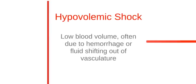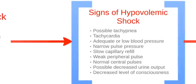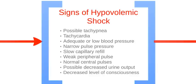First we'll talk about hypovolemic shock. Hypovolemic shock is caused by low blood volume, often due to hemorrhage or fluid shifting out of the vasculature. The signs include possible tachypnea, tachycardia, adequate or low blood pressure, a narrow pulse pressure, slow capillary refill, weak peripheral pulses, normal central pulses, possible decreased urine output, and/or decreased level of consciousness.